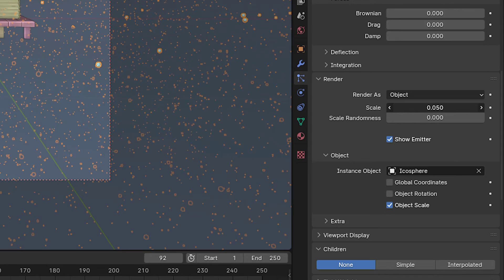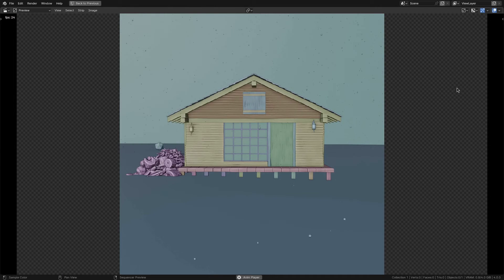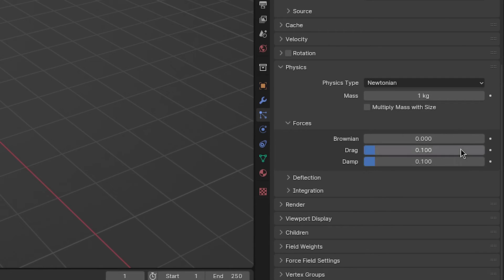Now they're probably too big, so reduce the scale until they are about one to two centimeters and give them some scale randomness. By default, they will fall way too fast. So give them some drag and damp to slow them down and some brownian to make them fall kind of swirly. Here are my settings if you want to copy them.